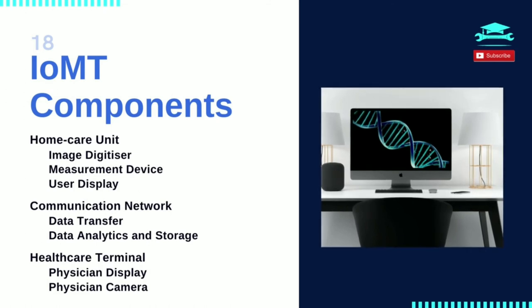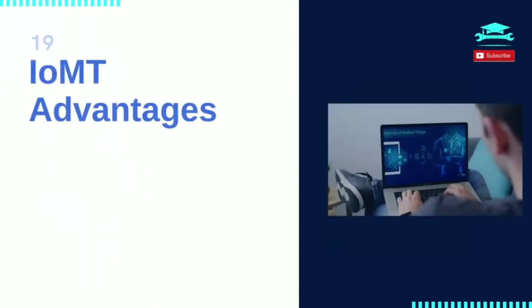IoMT components consist of a home care unit and a healthcare terminal. The home care unit includes an image digitizer with main, auxiliary, and document cameras; measurement devices such as ECG, BP measurement, and oxygen monitor; a user display to visualize data through mobile or computer screens; a communication network for wireless or wired data transfer; and data analytics that processes patient data for monitoring and storage in cloud servers.